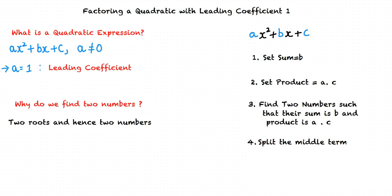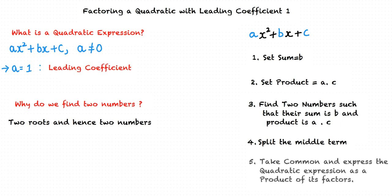We then split the middle term and write it as the sum of the two numbers we have determined. We finally take the common terms out of the expression and express the quadratic expression as a product of its factors.